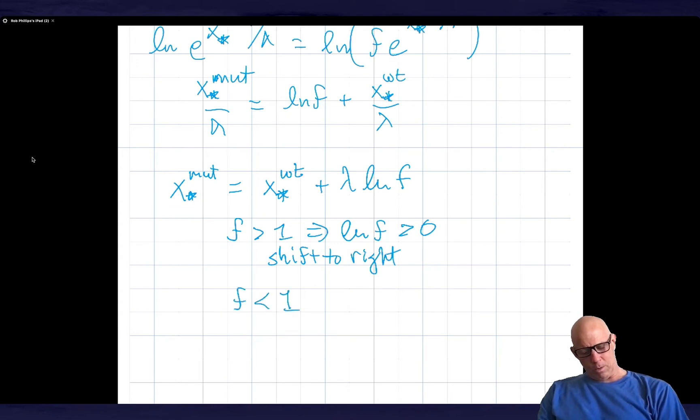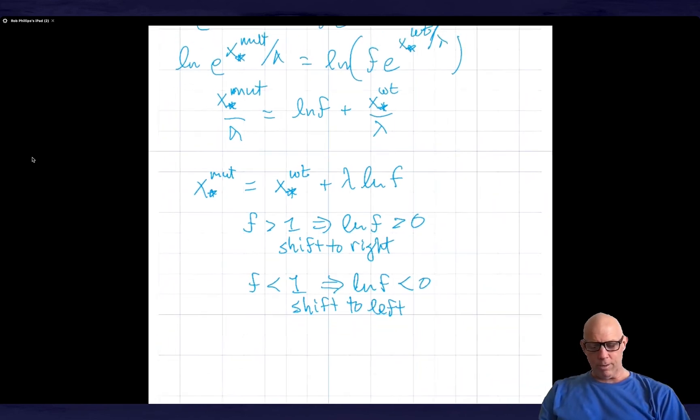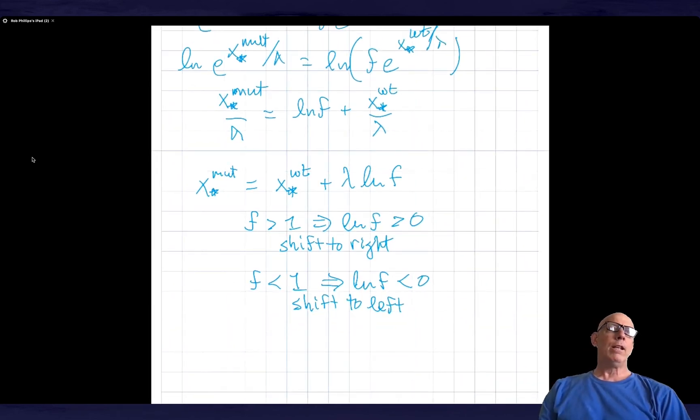If f is less than 1, then that implies that log of f is less than 0, and so we have a shift to the left. How do I know it's a shift to the right or the left? All I'm doing is asking about the sign, the sign that's going to be in front. Are we going to take the original position and add something to it or subtract something from it? If we add something, that means we shift to the right. If we subtract something, we move to the left. So that's the prediction of the French flag model in its sort of most naive incarnation.